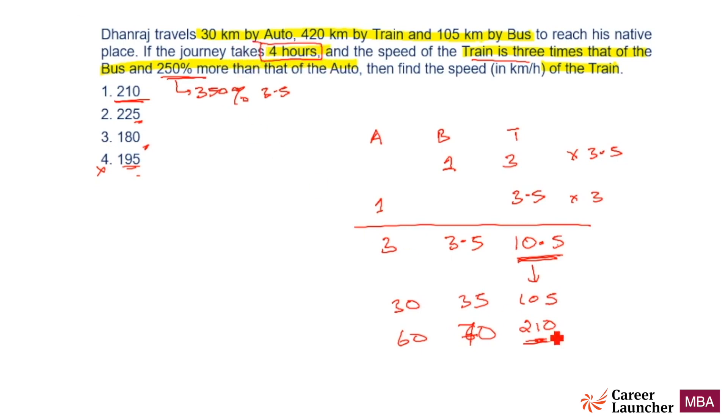Auto: 30 kilometers at 60 kilometers per hour means half an hour. Train: 420 kilometers at 210 kilometers per hour is 2 hours. Bus: 105 kilometers at 70 kilometers per hour is 1.5 hours. What is the total time taken? 2, 3.5, and 0.5 is 4.